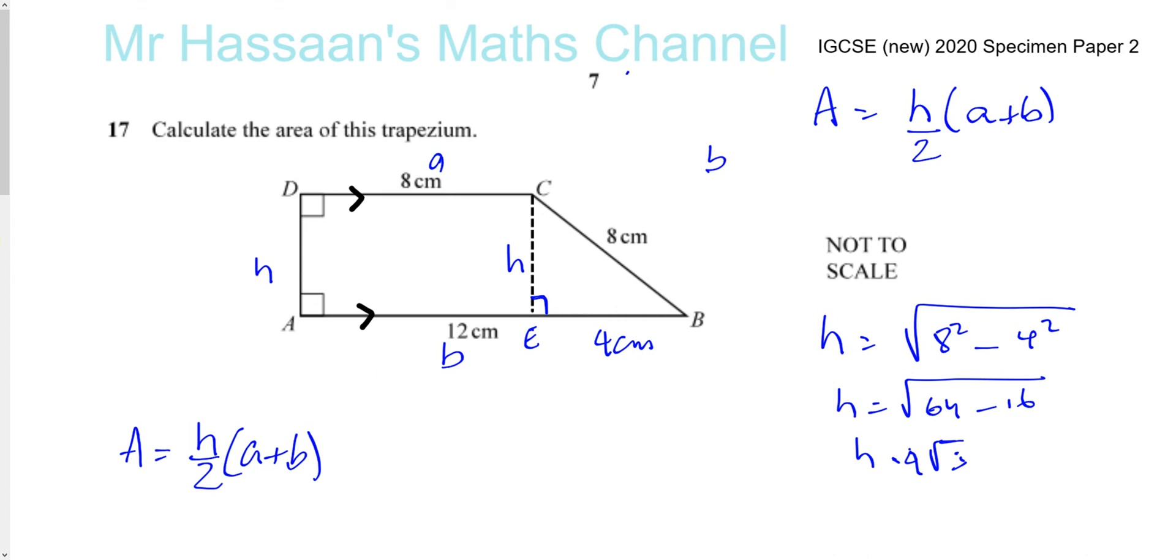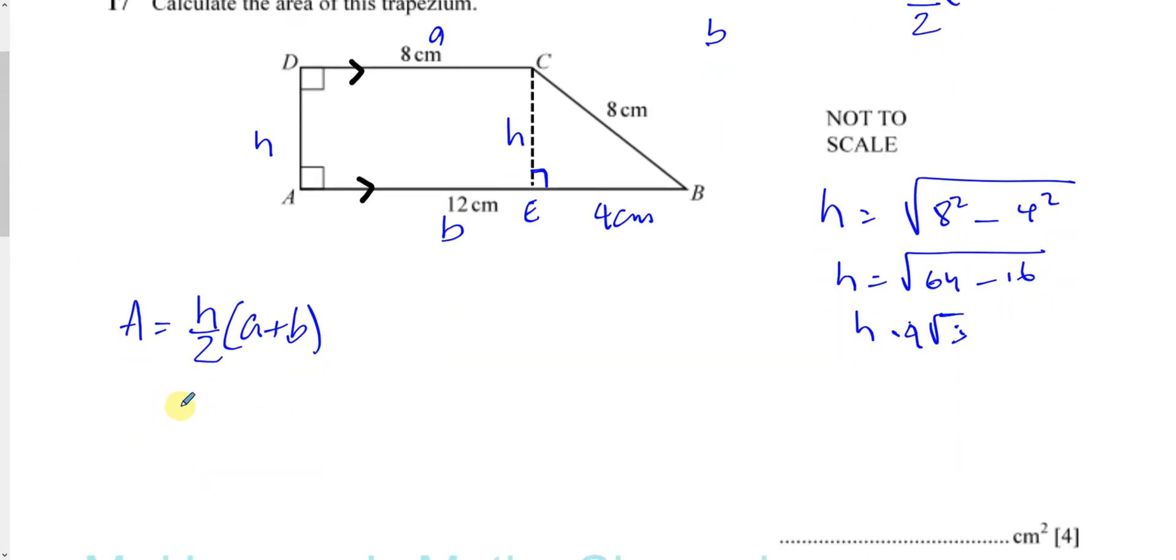We have to find the area now. The area is going to be 4√3 divided by 2, times the sum of the parallel sides, which is 8 + 12. Once I've found the height of the trapezium, I can use that to find the area because I have the lengths of the other two sides.